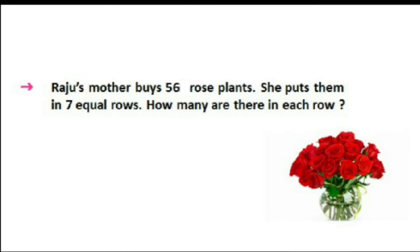She puts them in 7 equal rows. Now 56 plants hain aur unko 7 rows mein arrange karna hai. To how many are there in each row? Each row yane ki one — one row mein kitne hain, woh find out karna hai. So two things are given: rose plants diya hai aur rows diya hai. Number of rose plants and number of rows, and then we will find out how many rose plants are there in each row.